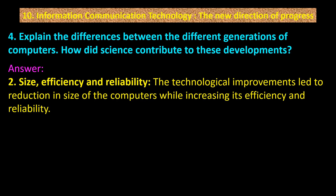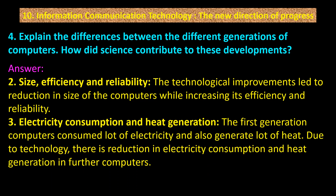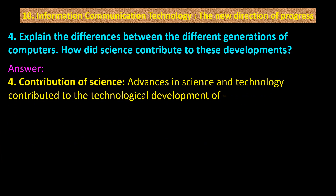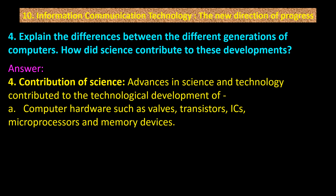Point 2 — Size, efficiency and reliability: the technological improvements led to a reduction in size of computers while increasing efficiency and reliability. Point 3 — Electricity consumption and heat generation: first generation computers consumed a lot of electricity and generated a lot of heat; due to technology, there is reduction in both in further generations. Contributions of science: advances in science and technology contributed to developments in computer hardware such as valves, transistors, ICs, microprocessors and memory devices, as well as networking technology and devices.